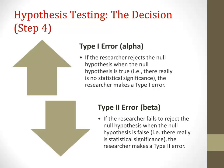Then we have the type 2 error, which is called beta. In type 2 errors, it's sort of the opposite of type 1 error. If the researcher fails to reject the null hypothesis when it's actually false — that is, they find there's no statistical significance when there actually should be — then the researcher makes a type 2 error.